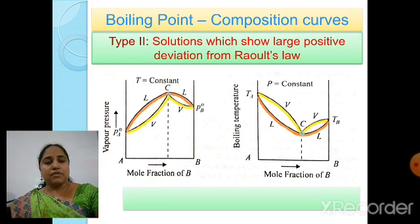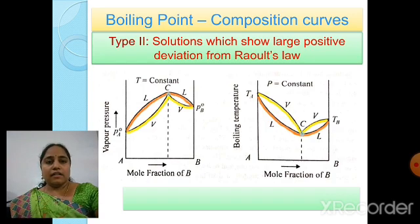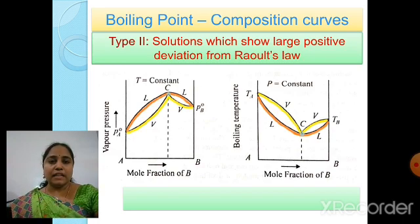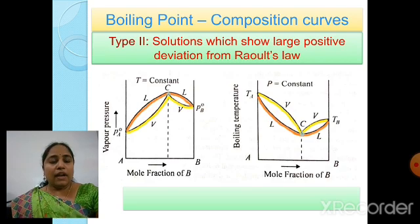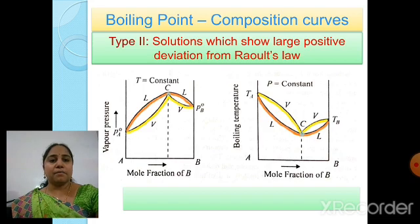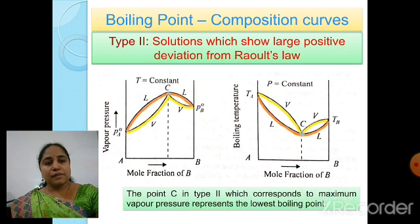For Type 2 solutions showing large positive deviation from Raoult's law, the boiling point-composition curve is the inverse of the vapor pressure-composition curve. The maximum point in the vapor pressure-composition curve becomes a minimum point in the boiling temperature-composition curve. The point C in Type 2, which corresponds to maximum vapor pressure, represents the lowest boiling point.